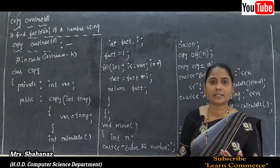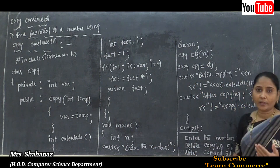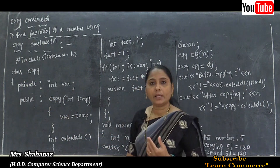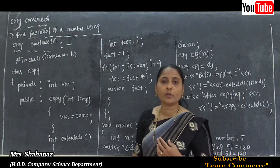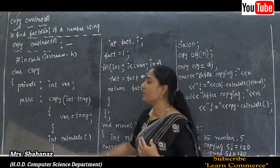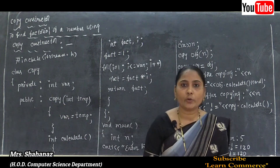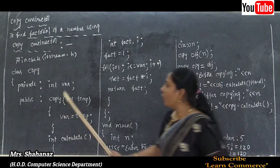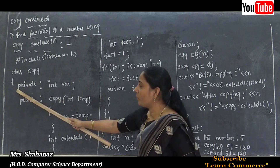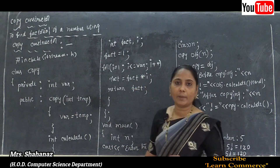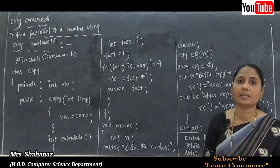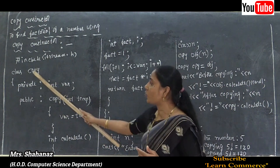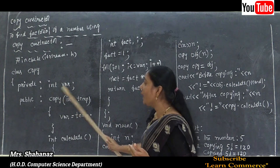Next, 'class' is the keyword used to declare a class. The class name we are using is 'copy' — a user-defined name. After the opening flower bracket, we declare the member variables, also called member data of the class. The member data of the class 'copy' is named 'var'.